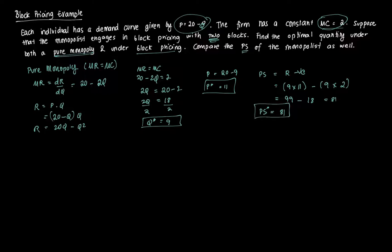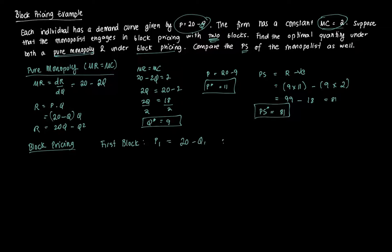Now let's go to block pricing. In block pricing, we have two relevant demand curves. For the first block, P1 = 20 minus Q1. For the second block, P2 = 20 minus Q2. So we have two demand curves with two separate prices and two different quantities for each block.